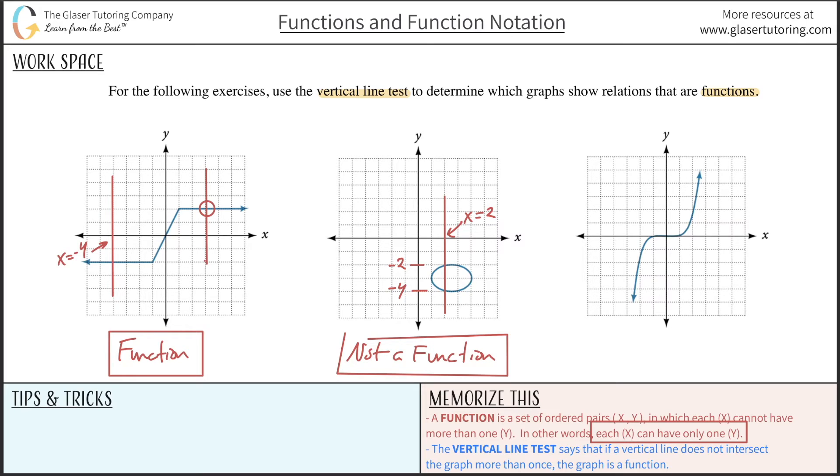Last example here, same thing. Draw your vertical line - not going to belabor this one too much. But as we can see, no matter where I draw it, it's only going to intersect the graph at one particular point, not more than one. Therefore we can say it's a function.